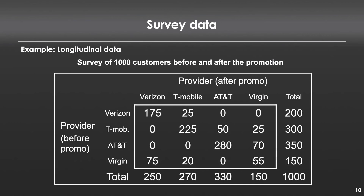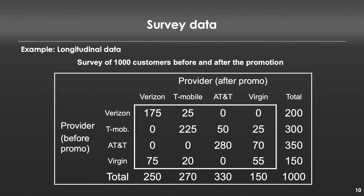The way to read this matrix: on the right side are the totals for how many people subscribed to each service provider prior to the promotion; on the bottom, how many were subscribers following the promotion. These are the same totals as before. What's new is the inside of the box — our switching information. For example, there were 25 people who were originally Verizon customers but became T-Mobile customers, meaning 25 people switched from Verizon to T-Mobile.